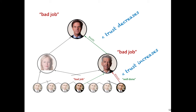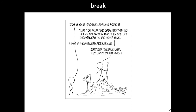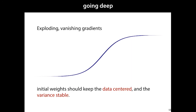We get a new perspective on deep learning: we call these things neural networks because they were inspired by neurons 50 years ago. But really there's not much to do with neurons and networks anymore — it's mostly compositions of many mostly linear functions with a little bit of non-linearity. That's backpropagation — that's how we train neural networks.